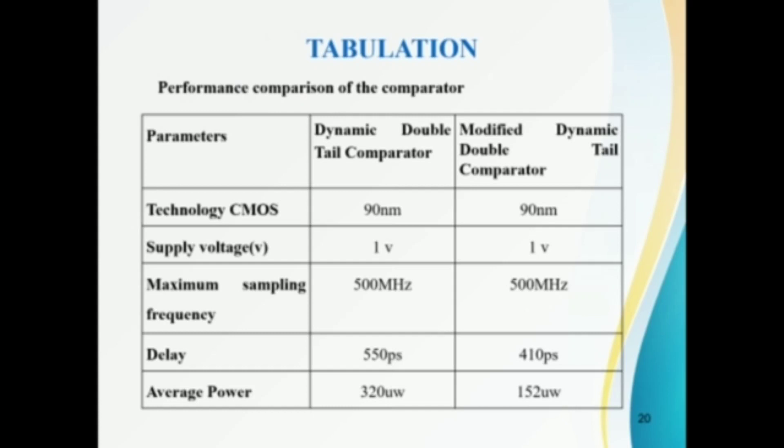Let's get into the tabulation. The parameters used here are technology CMOS, supply voltage, maximum sampling frequency, delay and average power. For a dynamic double tail comparator, it's 90nm. And for a modified dynamic double tail comparator, it's same, 90nm. Here the supply voltage is also the same, 1V each.